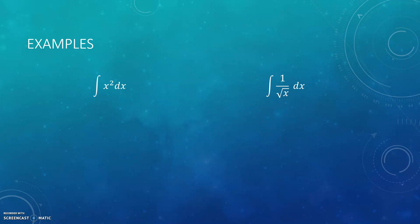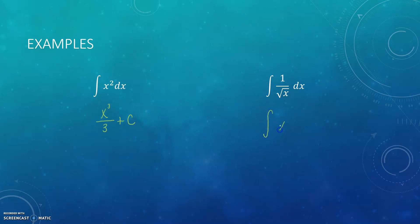Here are a couple of examples. I'm finding the antiderivative of x squared, so that would be x to the third over three plus C — I just add one to the exponent and then add C. For the second one, before I take the antiderivative, I'm going to rewrite it so that it looks like x to the n. Then when I take the antiderivative, I add one to the exponent and divide. I would probably rewrite that as 2 times the square root of x plus C to make it a little extra fancy.